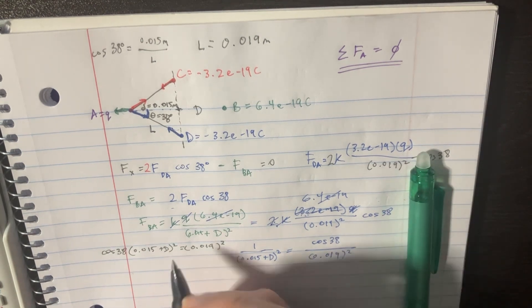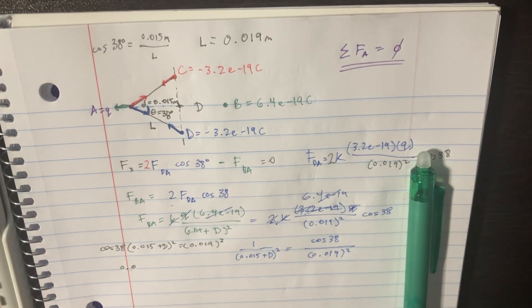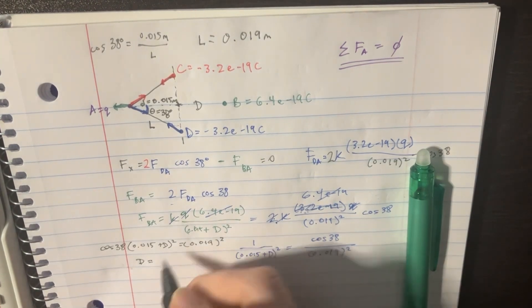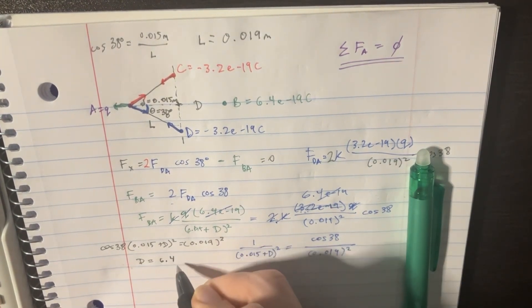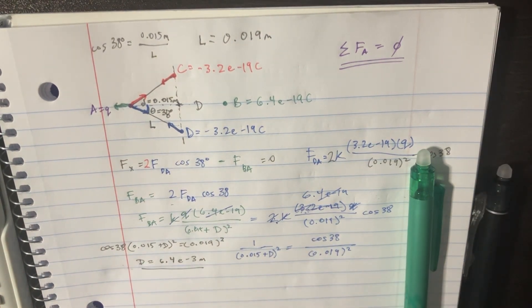And so, then I get this 0.0. Actually, let's not do that one. Let's check. We'll get the answer for D real quick here. Just doing that on the calculator. D equals 6.4e to the negative 3 meters. And there we go. Not too bad. That's just going to make the net force 0. Not too bad.